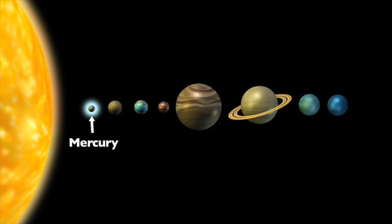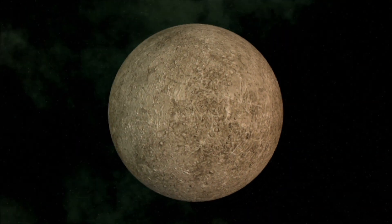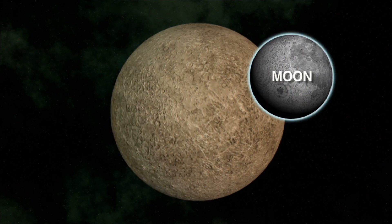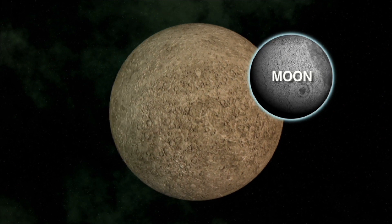Mercury is the smallest planet and the closest to the sun. The surface of Mercury is similar to our moon. It has a very barren, rocky surface, covered with many craters.